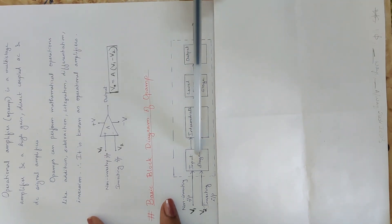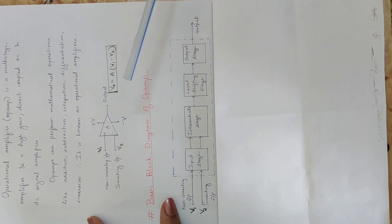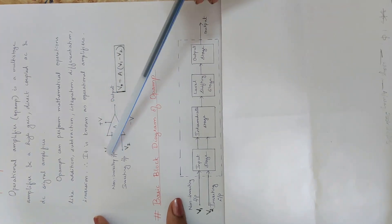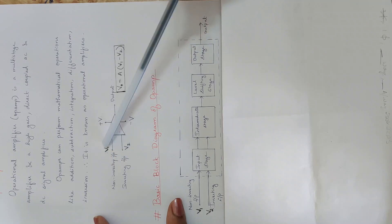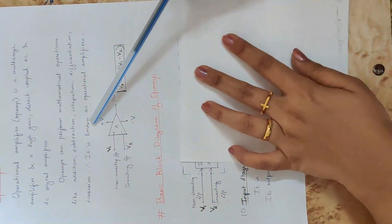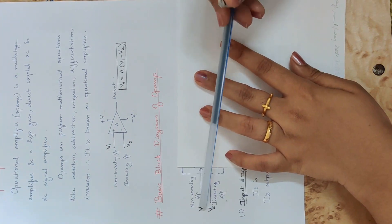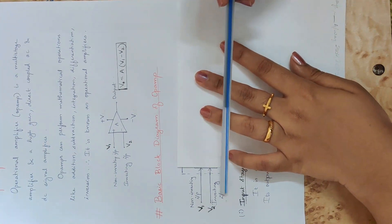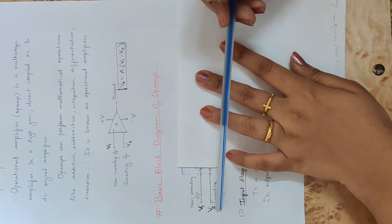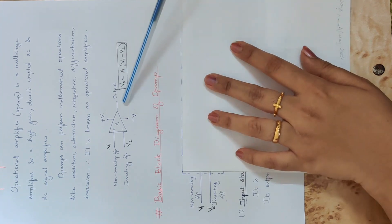These are the stages of Op Amp. Now we have two input terminals here. The Non-Inverting Input terminal voltage is V1, and the Inverting Input Terminal voltage is V2. Now we have an output.